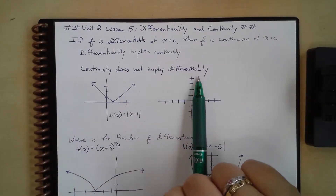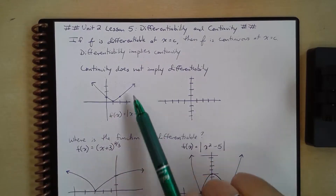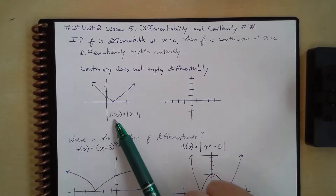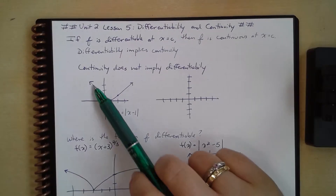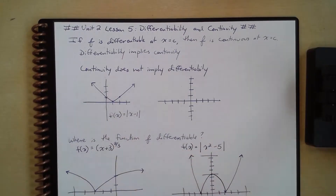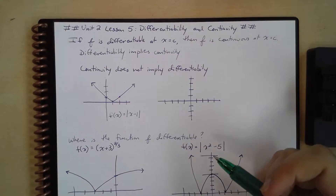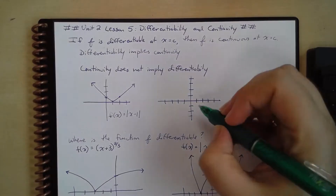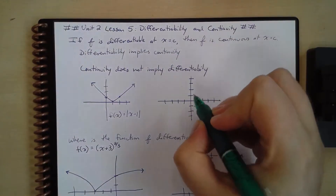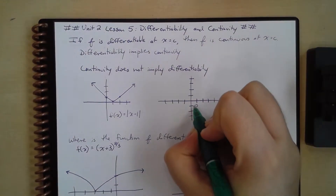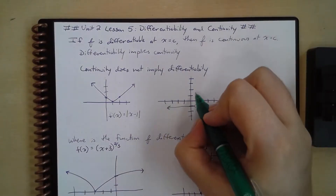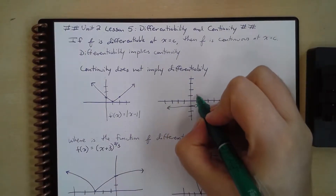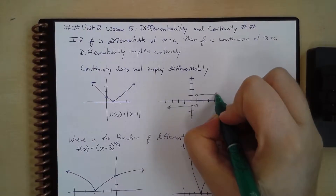Let's actually see that in action. Here we have a continuous function, the absolute value of x minus 1. This is continuous. But if I actually graph the derivative, the derivative is going to look like an open circle at (1, negative 1) going to the left, and an open circle at (1, 1) going to the right.